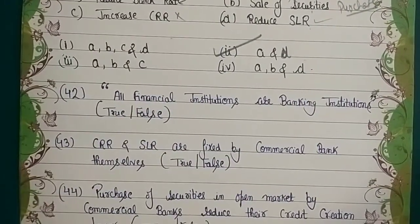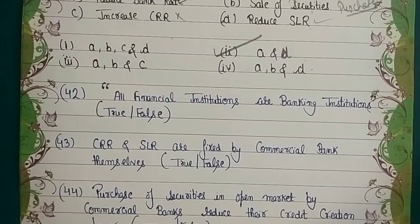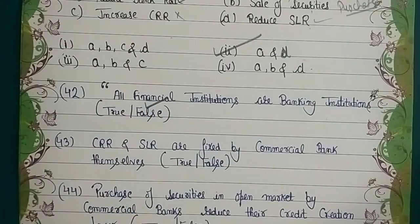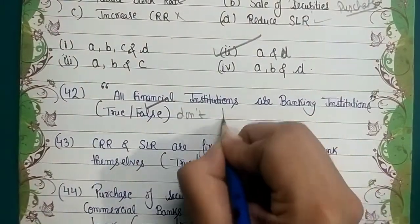Question 42: 'All financial institutions are banking institutions' — true or false? The major work of a banking institution is to accept deposits and give loans. Commercial banks and central banks do a lot of work. But saying all financial institutions are banking institutions is wrong. Not all financial institutions perform the primary banking functions of accepting deposits and lending.